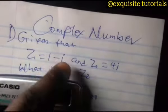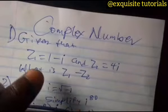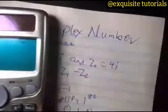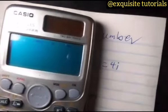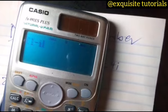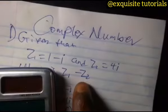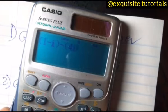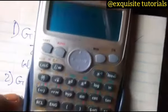The question is, given that this and this, what is Z1 minus Z2? As easy as ABC, Z1 is 1 minus i, so we have 1 minus i, close your brackets, then minus Z2, minus Z2 which is 4i. You can see it, this is how I got my i, I pressed ENG.